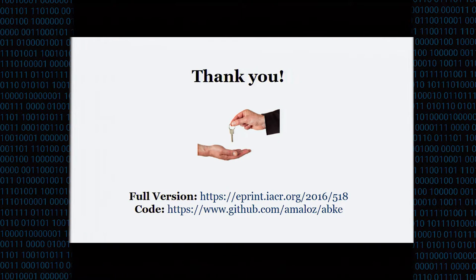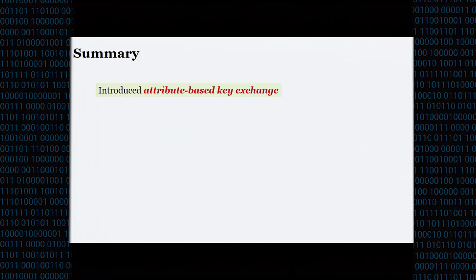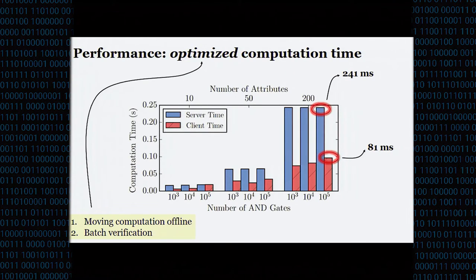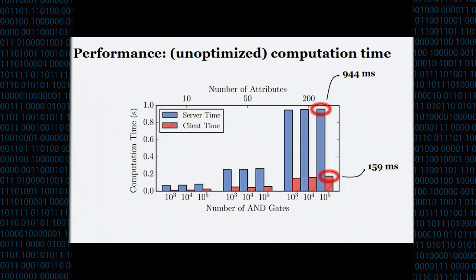Q: Is the time dominated by the garbling or the OT operation? A: The time is not dominated by the garbling — the batch verification helps a lot. In the paper we have a full breakdown of the unoptimized versus optimized cases and where the improvements come from. Garbling is very small — about four milliseconds — so we don't save much by moving it offline. It's mostly the batch verification.